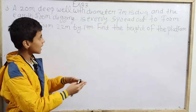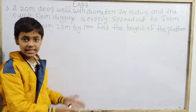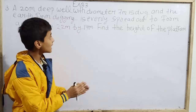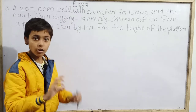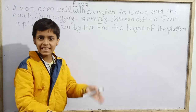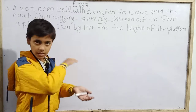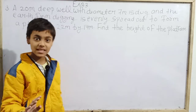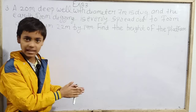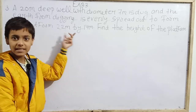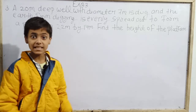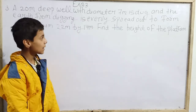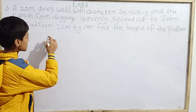So we have a 20 meter deep well with diameter 7 meter. The earth is spread to form a platform where the length is 22 meter and the width is 14 meter. We need to find the height of the platform. Let's draw the figure.